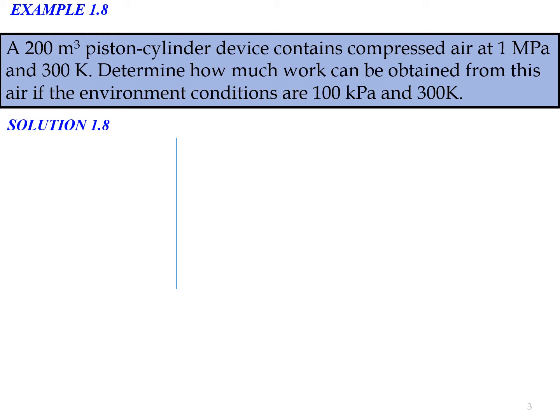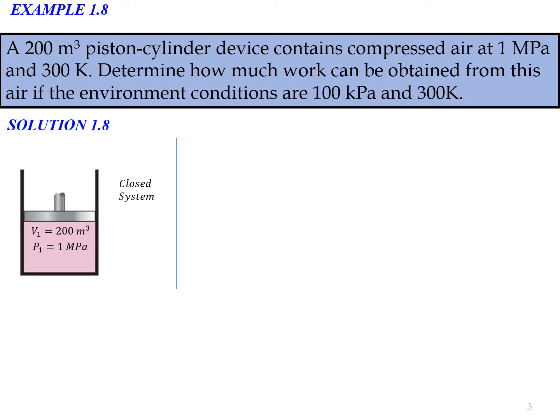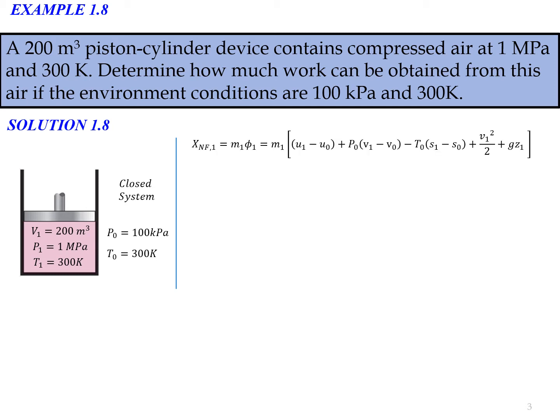This is the example question: a 200 cubic meter piston-cylinder device contains compressed air at 1 MPa and 300 Kelvin. Determine how much work can be obtained from this air if the environment conditions are 100 kPa and 300 Kelvin. First we draw the diagram and put in the information given. This is a closed system with initial volume of 200 cubic meters, pressure at 1 MPa, and temperature at 300 Kelvin. The surrounding has 100 kPa and temperature of 300 Kelvin.